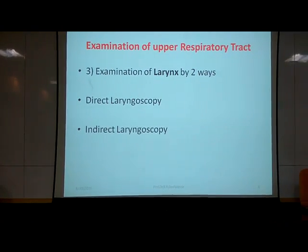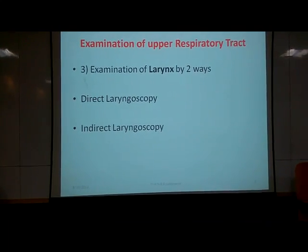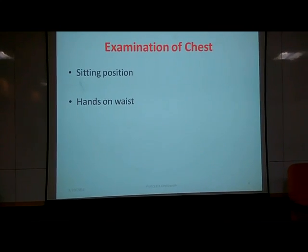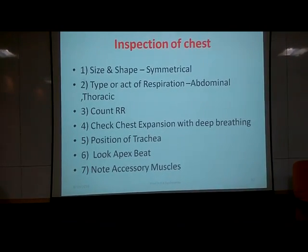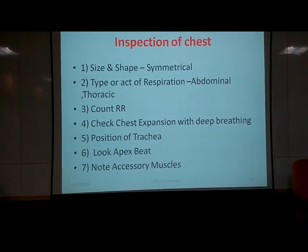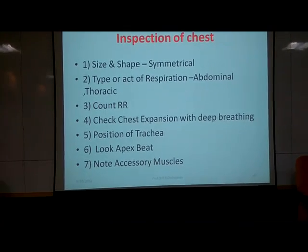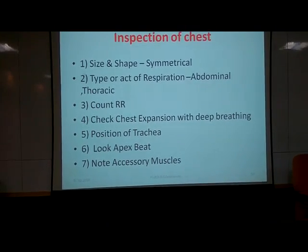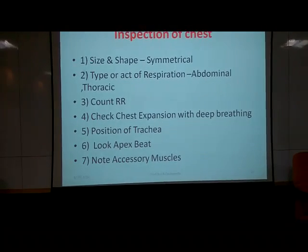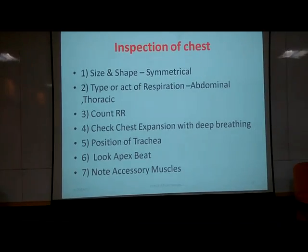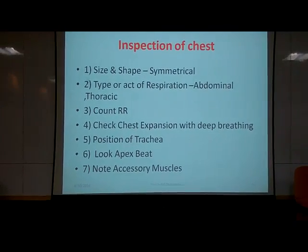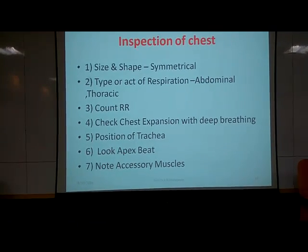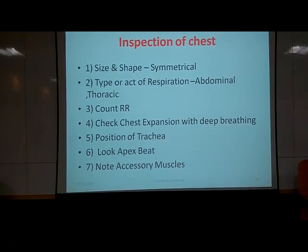Examination of the larynx is done by two ways: direct laryngoscopy and indirect laryngoscopy — that is a part of ENT. The patient position is sitting, with exposure to the waist. In inspection, we check: size and shape of the chest — it should be symmetrical and elliptical; type of respiration, whether abdominal or thoracic; respiratory rate; chest expansion with deep breathing; position of the trachea; the apex beat; and whether accessory muscles are acting.